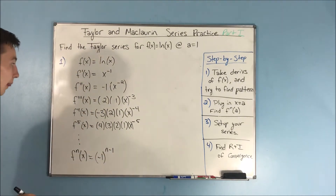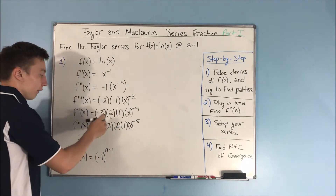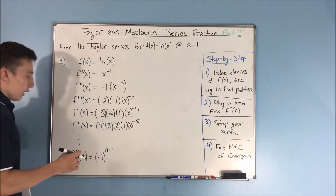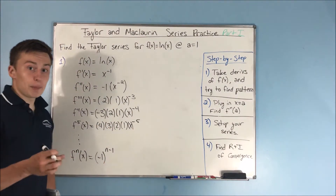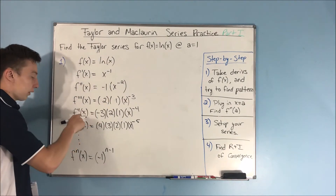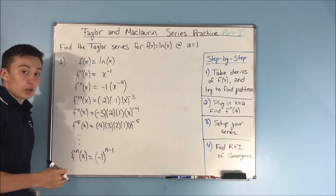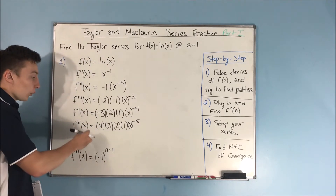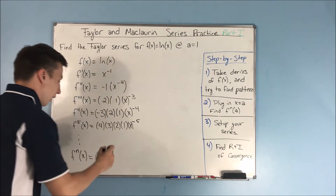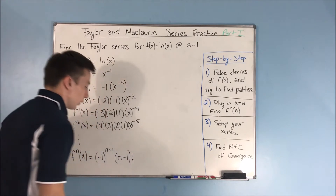We also see that we have a factorial going on — 3 times 2 times 1, 4 times 3 times 2 times 1. Looking at this in comparison to our derivative: the third derivative has 2 factorial, the fourth derivative has 3 factorial, the fifth derivative has 4 factorial. So it's always 1 less — the factorial is always n minus 1 factorial.